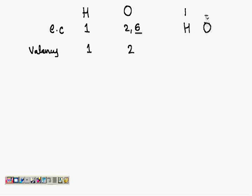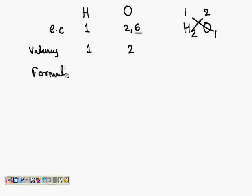Write the valency of hydrogen on top and the valency of oxygen on top. Then you exchange these valencies — bring 2 over here and bring 1 over here. So we get the formula of water: H₂O. It means in a water molecule there are two atoms of hydrogen and one atom of oxygen.